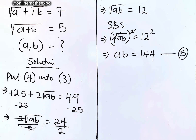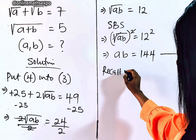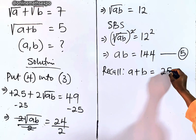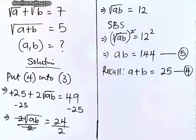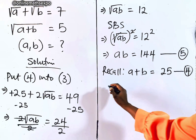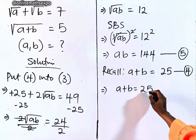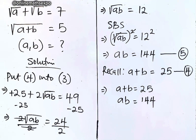Now recall equation 4: a + b = 25. Together with equation 5, ab = 144, we have a system of two equations that we will solve simultaneously to find the values we are looking for.